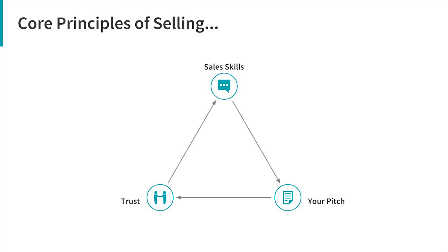The first thing I want to show you is my simplified theory on what it takes to sell. If you understand this little triangle, you're going to start getting sales in a big way. There are three points: trust, sales skills, and your pitch. These three things give you the ability to sell consistently at a high price. Trust is where you want to start — it's about people trusting you, your business, and the results you've gotten in the past. The more trust you have, the easier it is to sell.